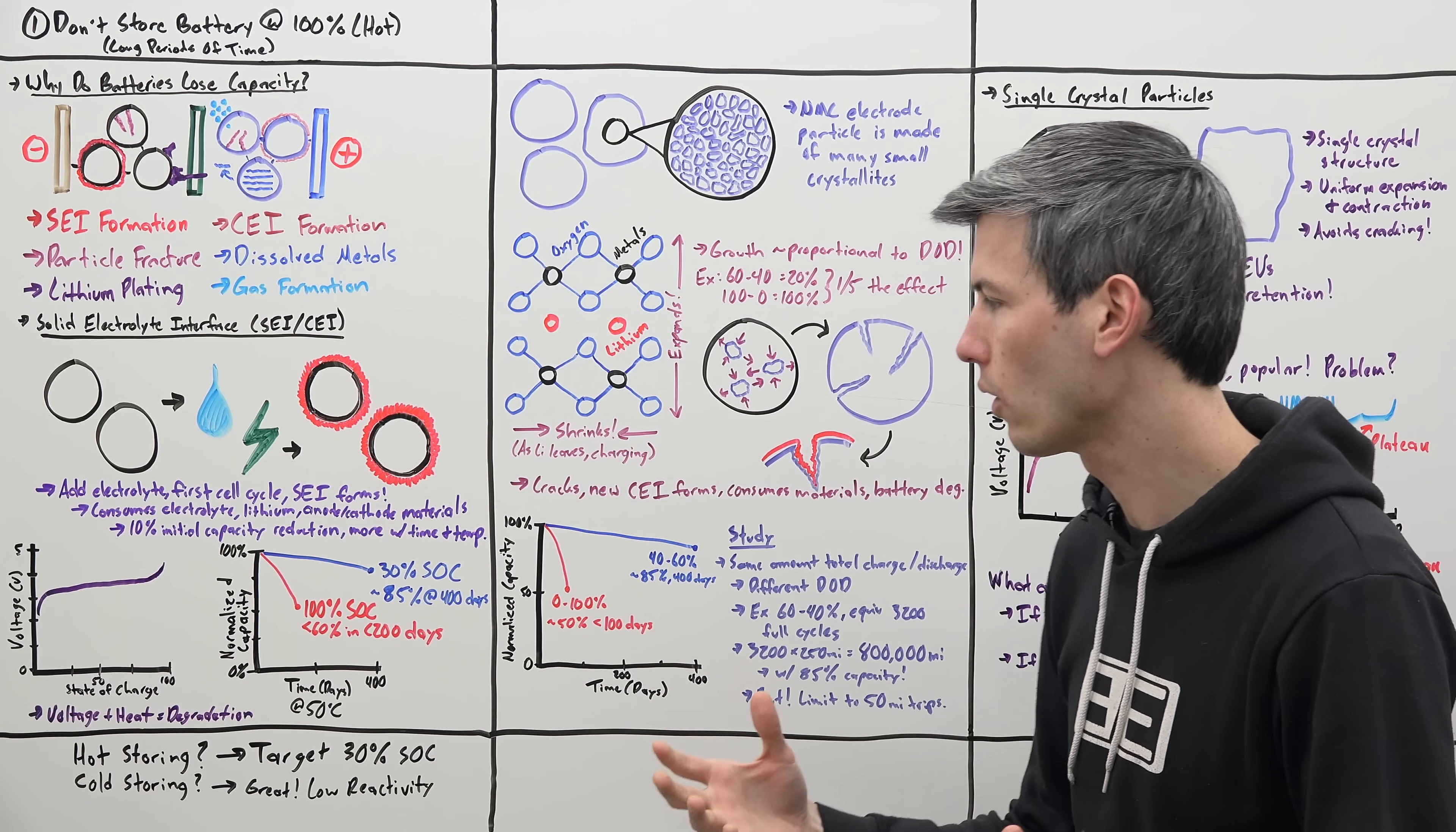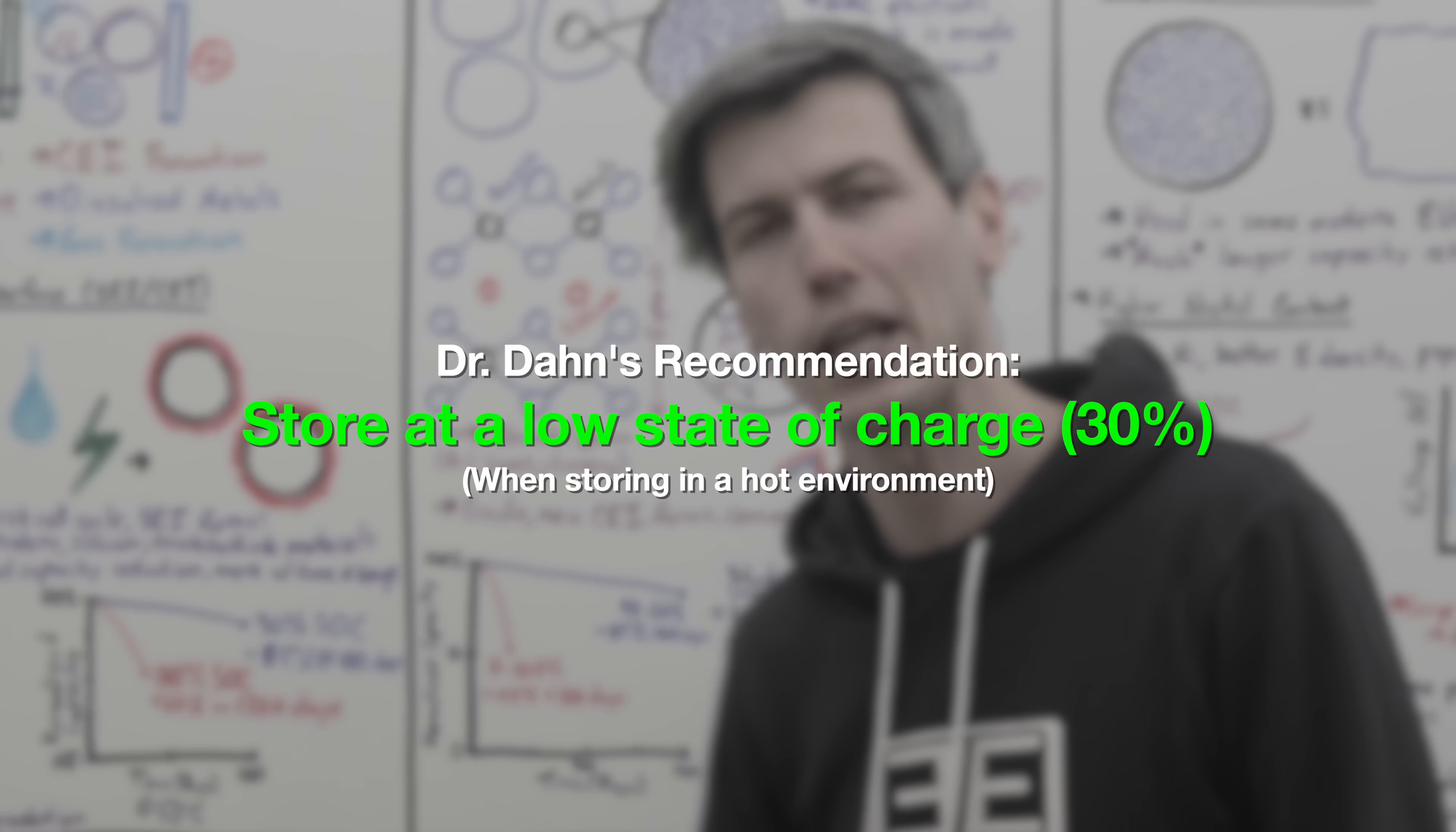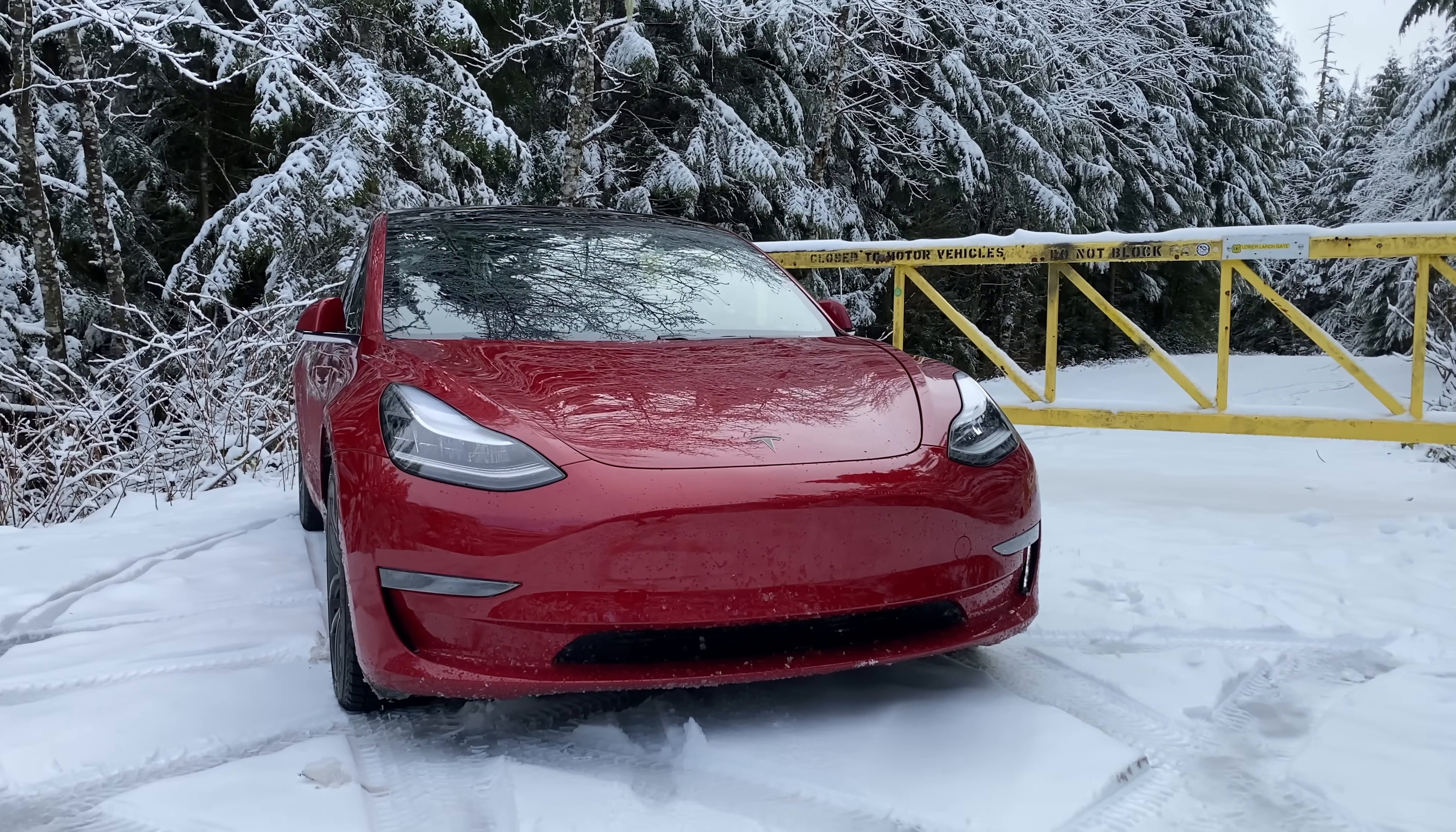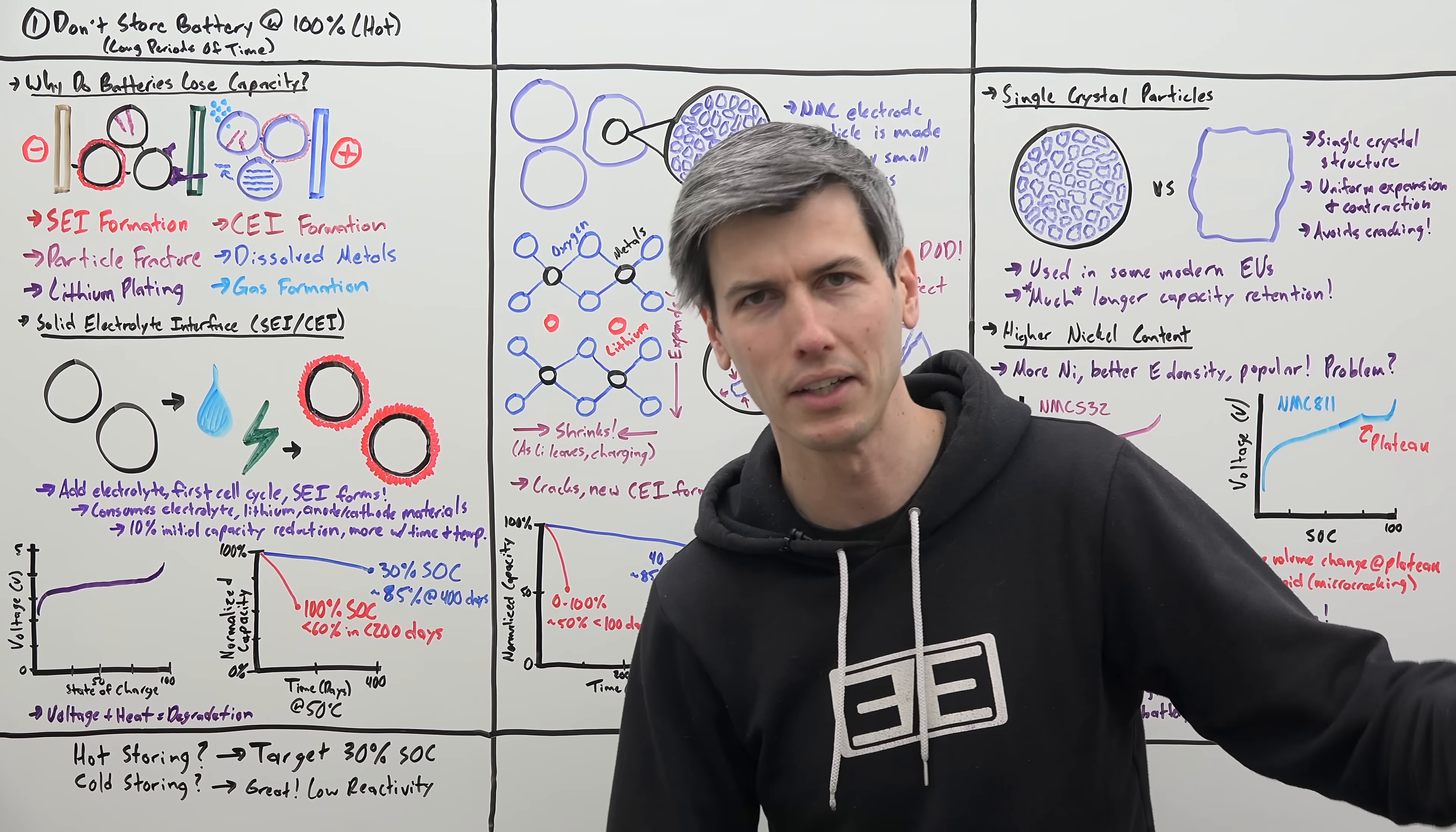So say you're storing your electric car for a long period of time and it's going to be in a hot environment. What should you do? He says you should target a 30% state of charge for that duration. Now if you're storing it in the cold, even for a long period of time, there's no worries. Because of the cold temperatures you'll have very little reactivity. So storing it at, say, 70% is no big deal.